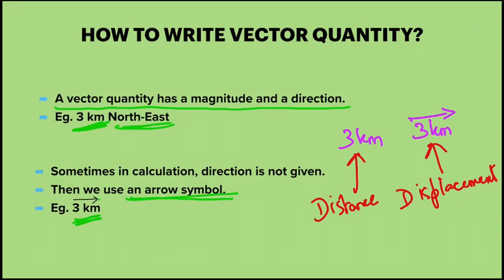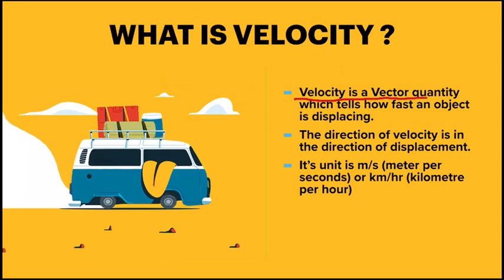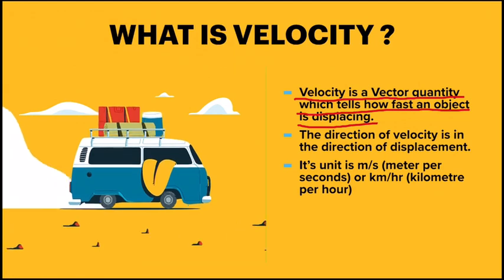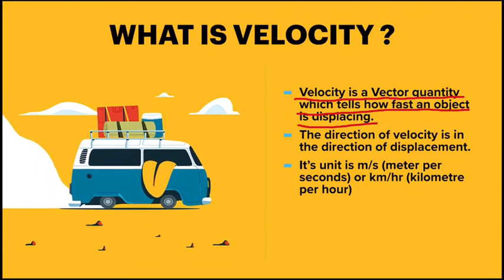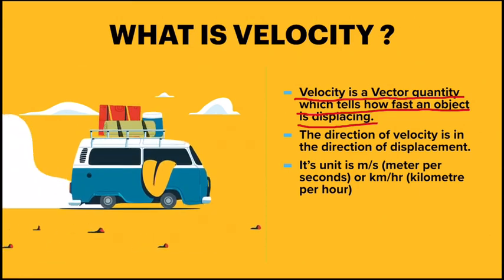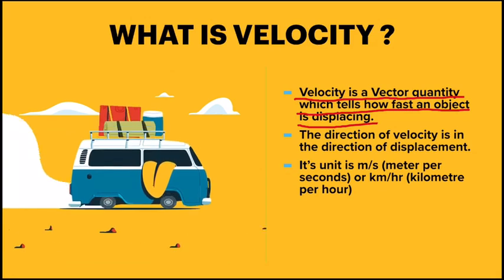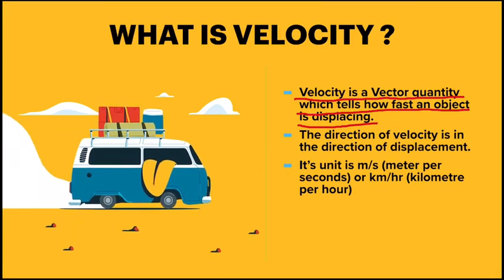Let's come to today's topic of discussion: what is velocity? Velocity is a vector quantity which tells how fast an object is displacing — displacing means changing position. We covered speed in the last class. Velocity is the same as speed, but it is a vector quantity, which means it has a direction. Speed is a scalar quantity that tells how fast an object is moving, while velocity is a vector quantity that tells how fast an object is changing its position.